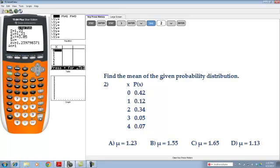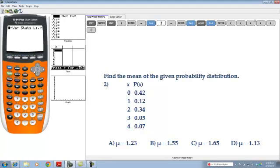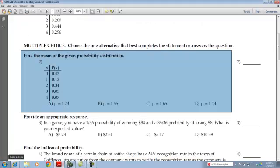I'm going to hit 2nd quit and then hit 2nd enter to pull up the last thing that I typed in. If you do have an older operating system, this is what your calculator would show: one variable stats, and then you would type in where your X values are and then where the corresponding probabilities. Hit enter again. We again see 1.23 which corresponds to the answer A.